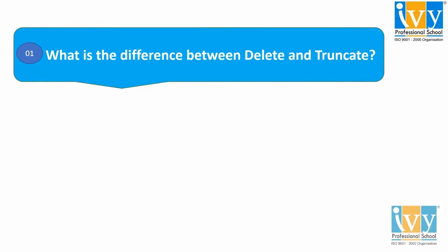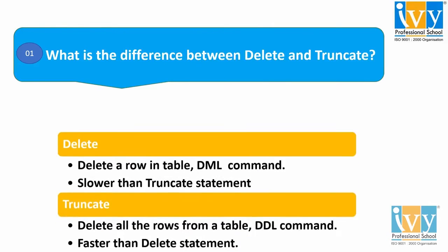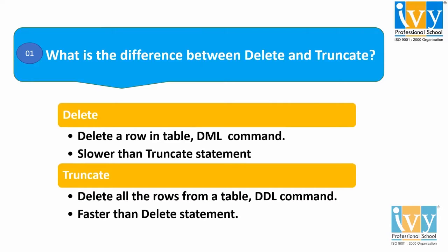Our first question is: what is the difference between DELETE and TRUNCATE? The DELETE statement is used when we want to remove a particular row or some records from the table, whereas the TRUNCATE statement will delete the entire rows from the table. DELETE is a DML command, where DML stands for Data Manipulation Language, and TRUNCATE is a DDL command, where DDL stands for Data Definition Language. TRUNCATE is faster than the DELETE statement.